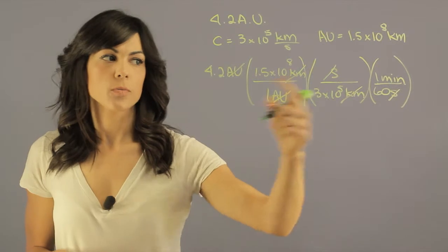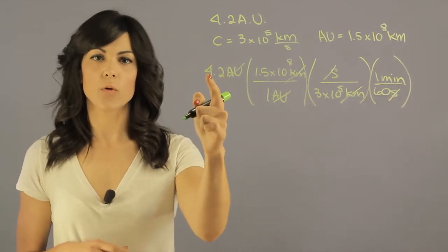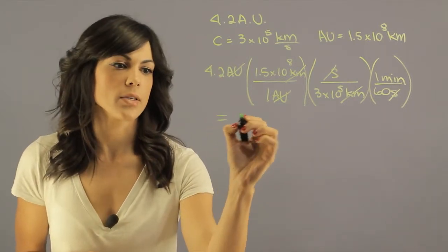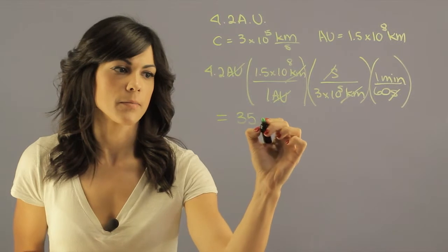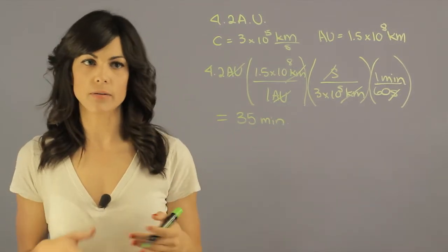That means that if we multiply all of this together we should get how long it takes light to travel 4.2 astronomical units in minutes. And the answer for this is about 35 minutes. So you can plug this into your calculator and test it out yourself.